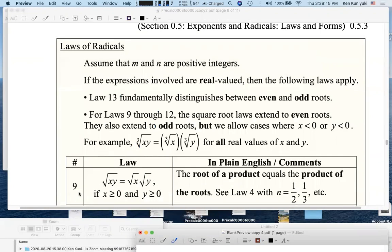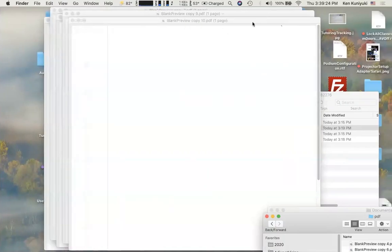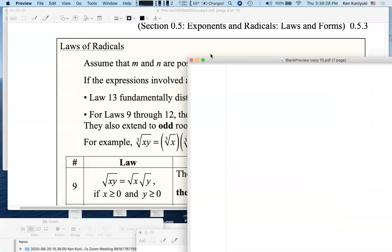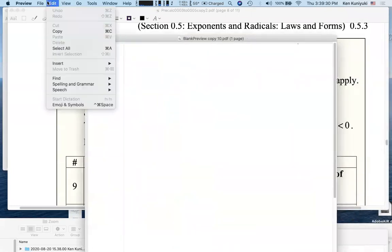Law number nine. The square root of xy equals the square root of x times the square root of y. Or one way to look at this, it's easier to read it in reverse. So for example,